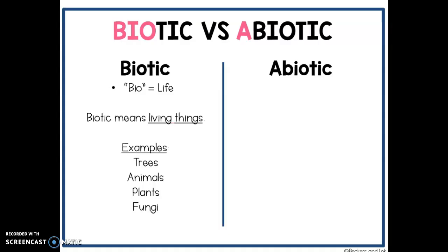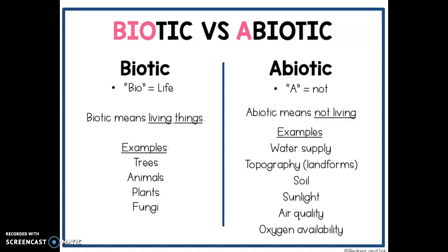Abiotic — if you remember, a means not and bio means living, so abiotic means not living. Abiotic factors are things like the water supply, the topography, the landforms that you have in your area — do you have mountains, do you have plateaus — the soil, the amount of sunlight, air quality, and the oxygen that's available.